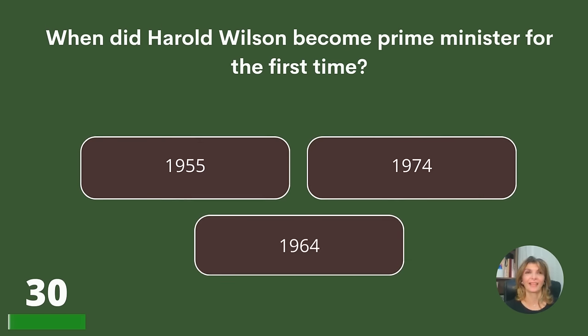When did Harold Wilson become Prime Minister for the first time? 1955, 1974, or 1964?